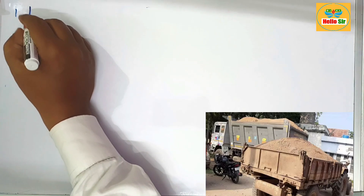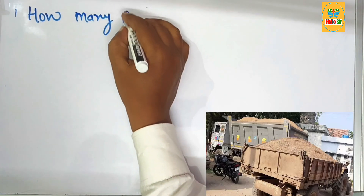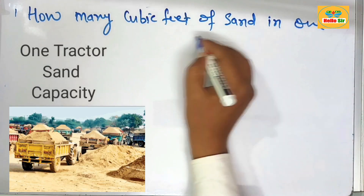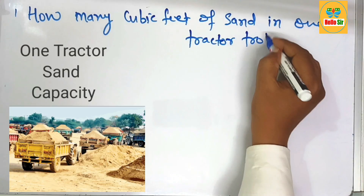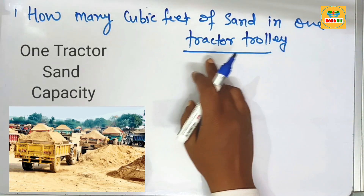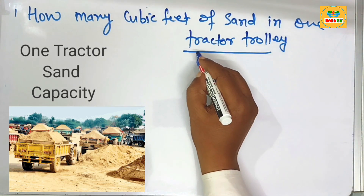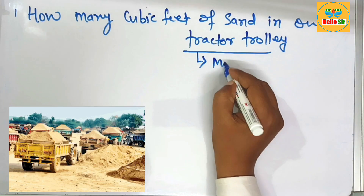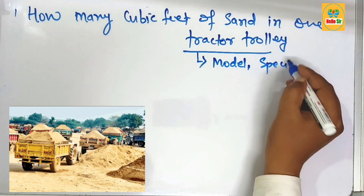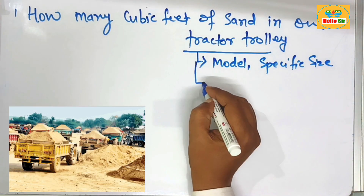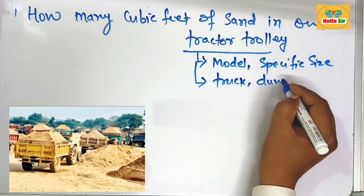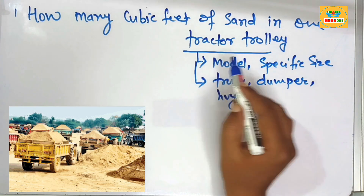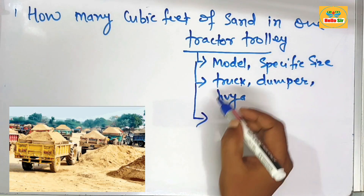In this video you will learn how many cubic feet of sand comes in one tractor trolley. You have to find out the sand capacity of one tractor trolley. In local civil construction, sand material is carried by tractor trolley, which comes in various specific models and sizes. Sand can also be carried by truck dumper.